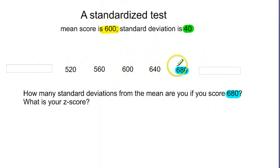That's two standard deviations above the mean. And so by going two standard deviations above the mean, our z-score is going to be just simply two.